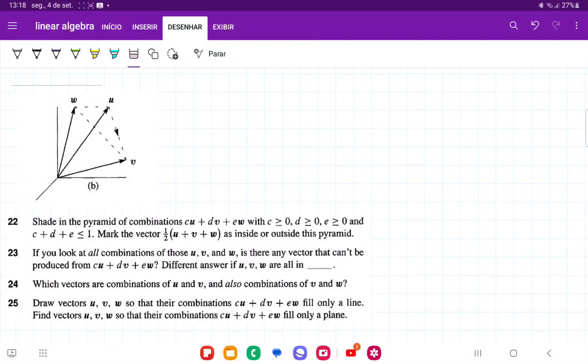So, for number 23, it's telling us if you look at all the combinations of those u, v, and w, is there any vector that can be produced from cu plus dv plus ew in 3D space?